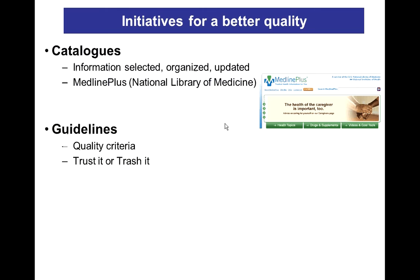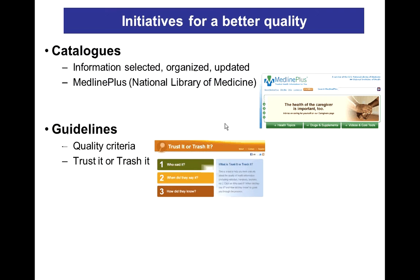Guidelines are a set of criteria helping internet users assess information quality. For example, 'Trust it or Trash it', developed by a network coordinated by Genetic Alliance, a non-profit health advocacy organization in the US.